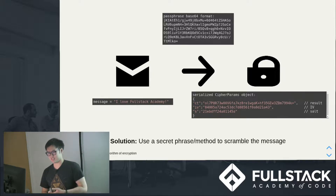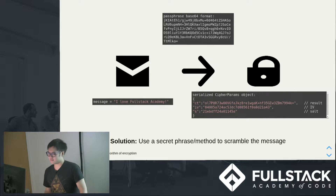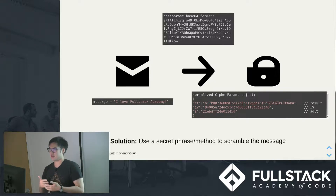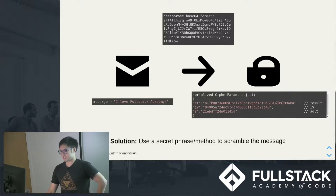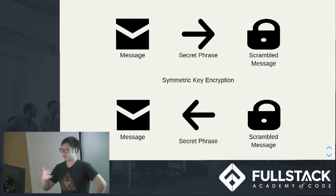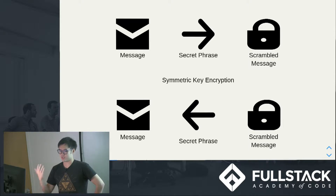And that's the idea behind symmetric key encryption, which is one of the basics in cryptography. I have my message on the left, my secret passphrase in the middle, and I use that along with a system to scramble my message into something that only I can read. It works both ways — I can scramble the message with the same secret phrase and unscramble it with the same secret phrase. This is the idea behind encryption, not to be confused with hashing, because hashing is one-way. That's why you store passwords in it — you can't reverse engineer what a password is, generally.